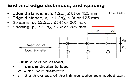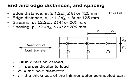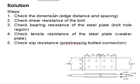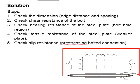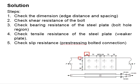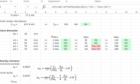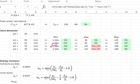E1 and P1 are longitudinal to the direction of the tensile force, while E2 and P2 are perpendicular to the force. Based on the diagram, E1 and E2 are both 35 mm, and P1 and P2 are both 70 mm. These are to be checked against the minimum requirement of 1.2 times the diameter of the bolt hole, and 2.2 and 2.4 times the diameter of the bolt hole.